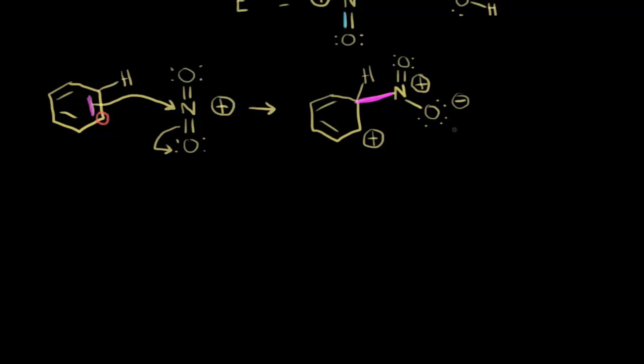We can draw some resonance structures. Moving these pi electrons in here gives us another resonance structure. We still have a hydrogen up top, and you can show a nitro group as NO2. These pi electrons in blue move over here, taking a bond away from that carbon, so we put a plus-one formal charge at that carbon.